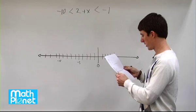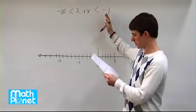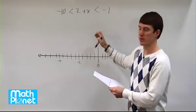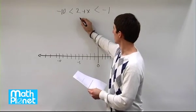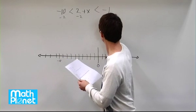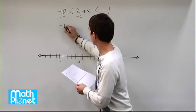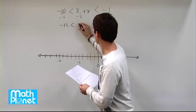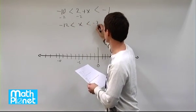What we need to do is subtract 2 from each quantity here. We want to get x by itself so we can see where it ends up. If we subtract 2 from each quantity, we have negative 12 is less than x, which is less than negative 3.